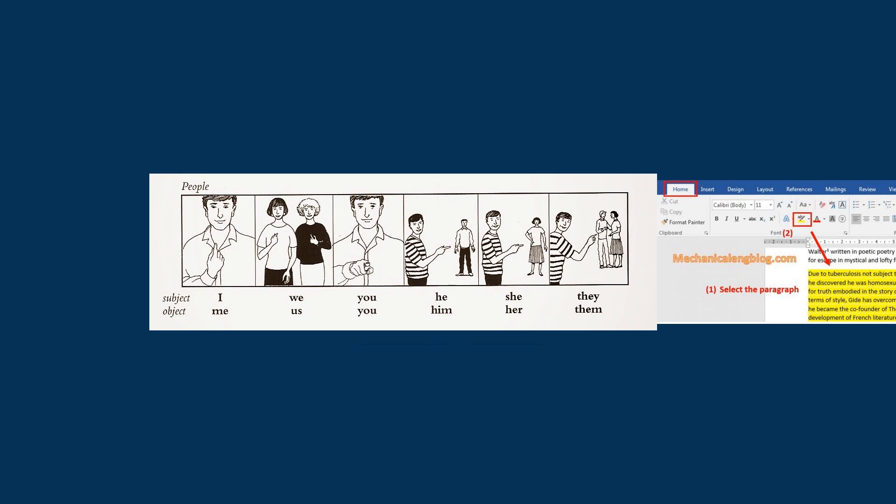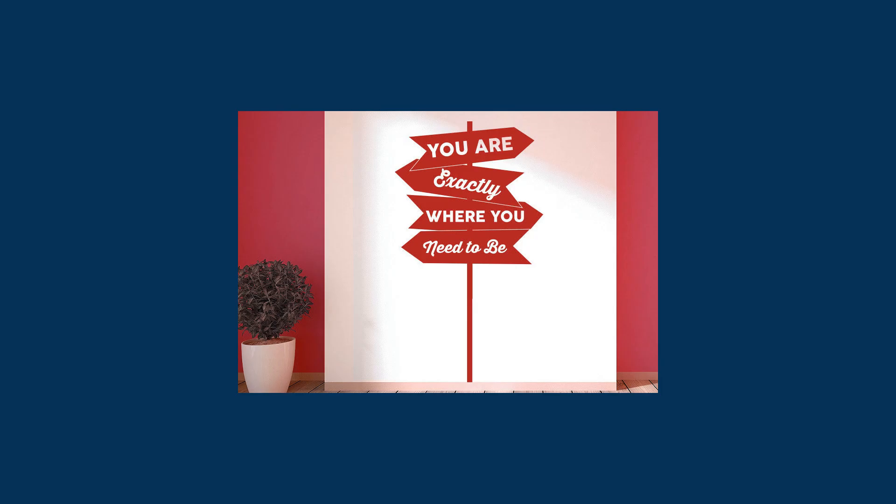The sentence "I am" consists of a subject pronoun, "I," and a linking verb, "am." The verb "am" is the first person singular present tense form of the verb "to be."